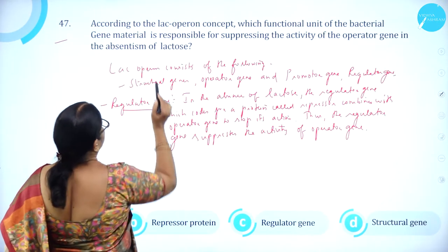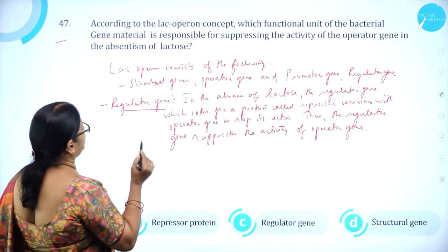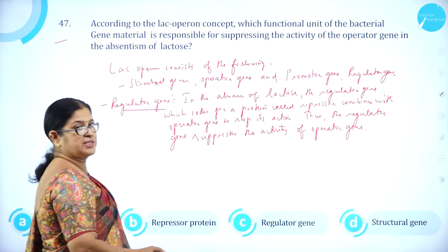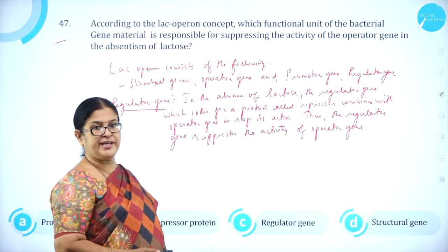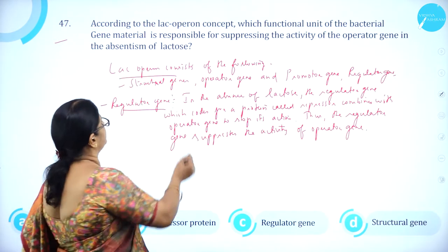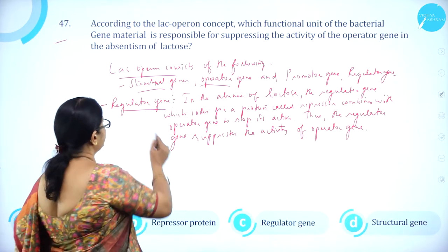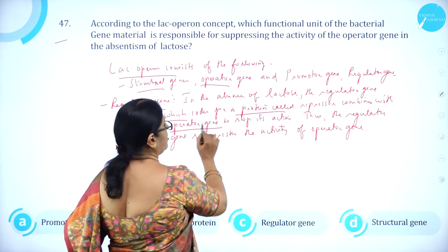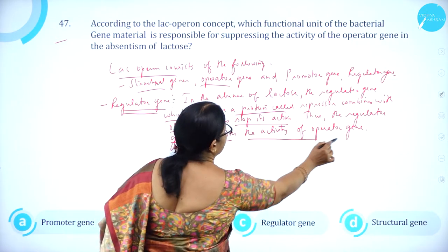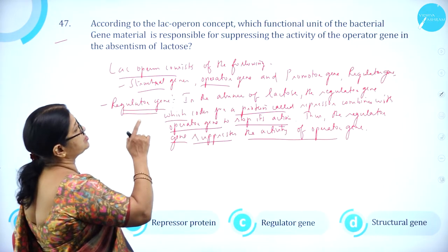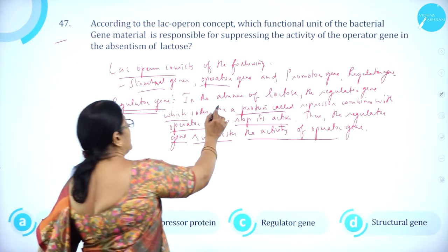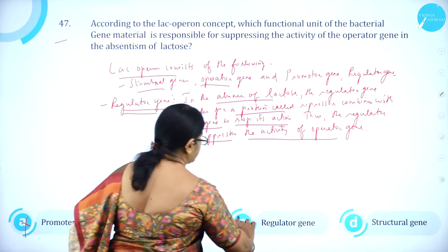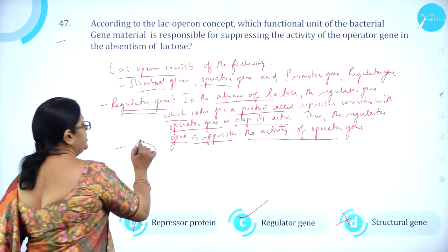Moving on to question number 47. According to the lac operon concept, which functional unit of the bacterial gene material is responsible for suppressing the activity of the operator gene in the absence of lactose? The lac operon consists of structural genes, operator gene, promoter gene, and regulator gene. In the absence of lactose, the regulator gene codes for a repressor protein that combines with the operator gene to stop its action, suppressing its activity. So option C, regulator gene, is correct.